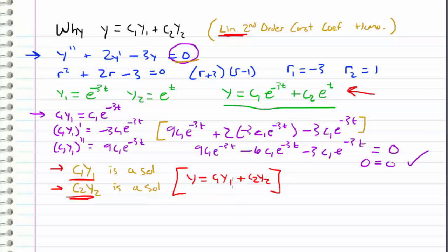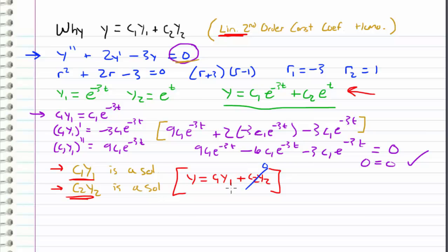To further build intuition on why this contains all solutions: if we let c1 equal zero, that term cancels out, and for any c2 we get everything contained in that part. Or if we let c2 equal zero, that cancels out and we have everything contained in the other part. And by adding them for whenever c1 and c2 are both nonzero, that will still satisfy the differential equation. Let's go ahead and show that right now.